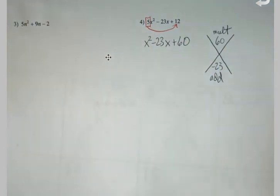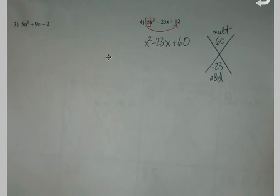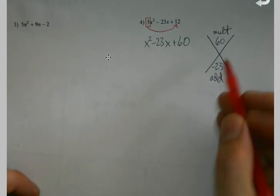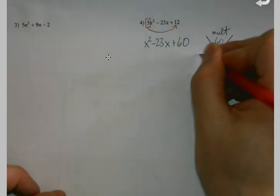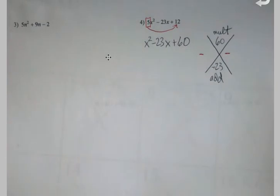Multiply to 60, add to negative 23. What do I know? I know if I multiply and get a positive, the signs are the same. If the signs are the same but I add to get a negative, both have to be negative. I know that part.